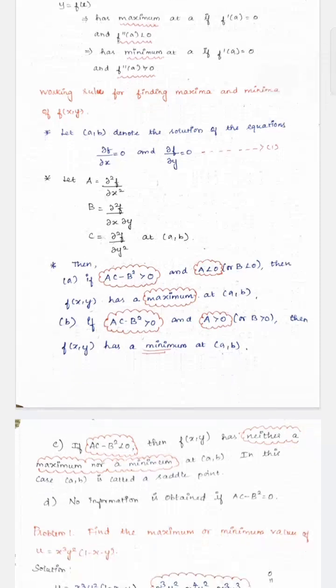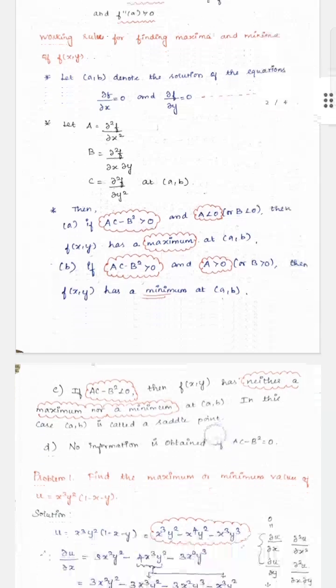Next, suppose AC - B² is less than 0. Then the function has neither a maximum nor a minimum at (a, b), and this point is called a saddle point. If AC - B² equals 0, we cannot get any information. The only case where we can determine maxima and minima is when AC - B² is greater than 0.